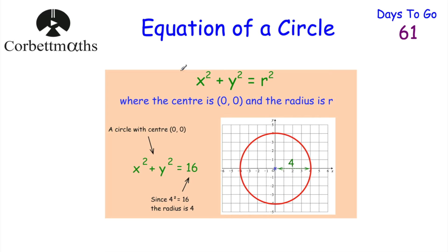Today we're looking at the equation of a circle. From the revision card, the equation of a circle at GCSE level is x squared plus y squared equals r squared, where the centre of the circle is the origin (0, 0) and the radius is r. For example, here we've got a circle whose centre is the origin and radius is 4, so its equation would be x squared plus y squared equals 16, because 4 squared is 16. It's very important to know this equation — the centre is the origin and r is the radius.